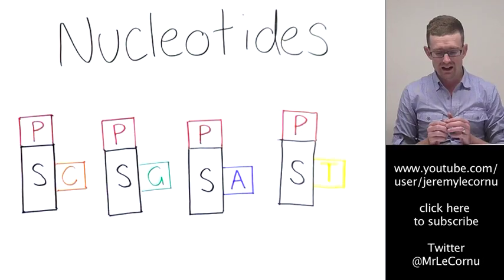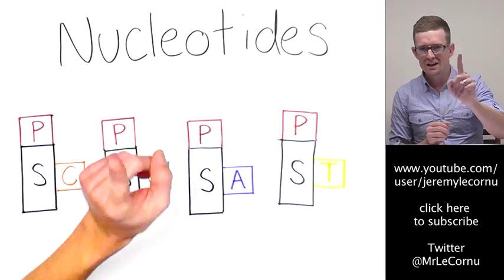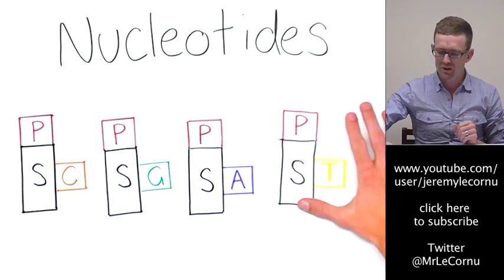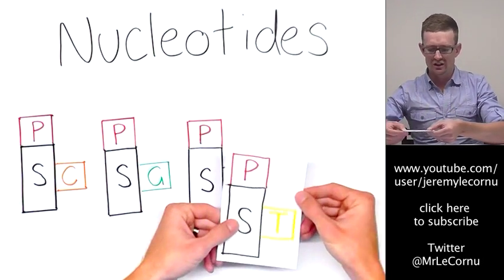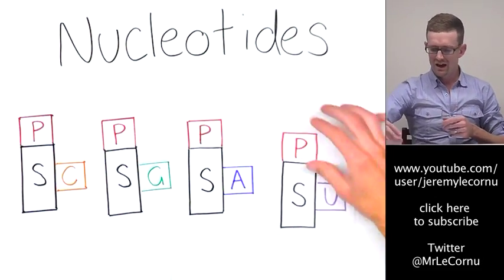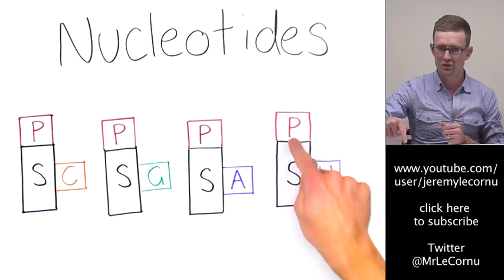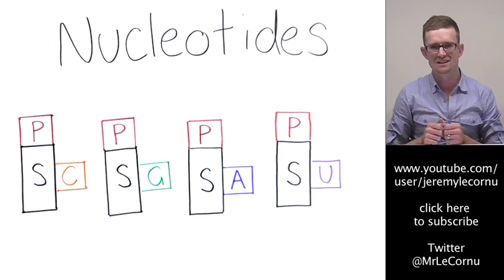Now, in RNA, we still have three of these nucleotides, but we are going to swap one of them. In RNA, we do not have the nucleotide T. Instead, we have uracil, U. As you can see, it's still a sugar and a phosphate, but the base is different.